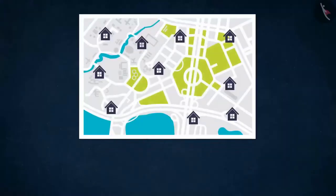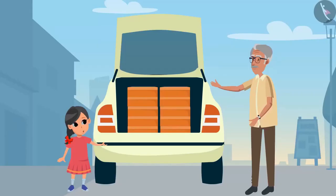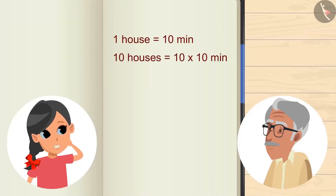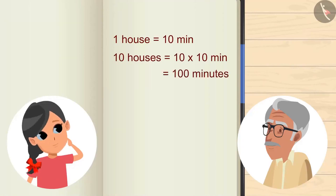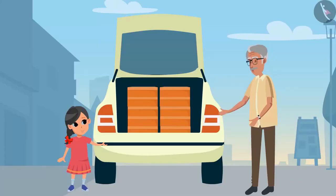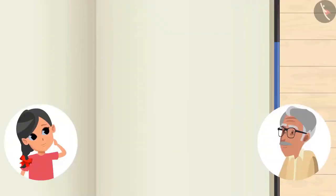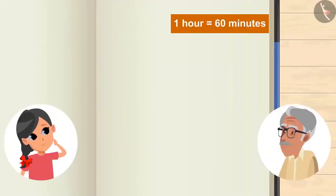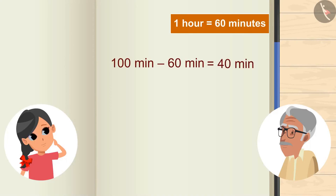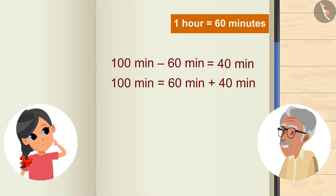Grandpa, how much time will each house take? Nearly 10 minutes. And we have to go to 10 houses. So 10 houses will take 10 minutes each — 10 multiplied by 10, it will take 100 minutes. Do you know how many hours are in 100 minutes? 1 hour has 60 minutes. If we subtract 60 from 100 minutes, we are left with 40 minutes. So 100 minutes means 1 hour and 40 minutes.